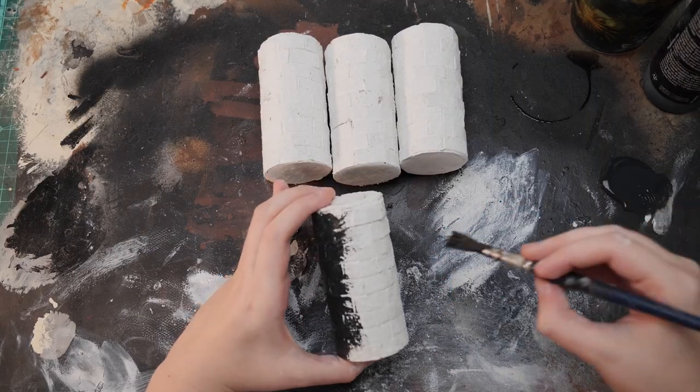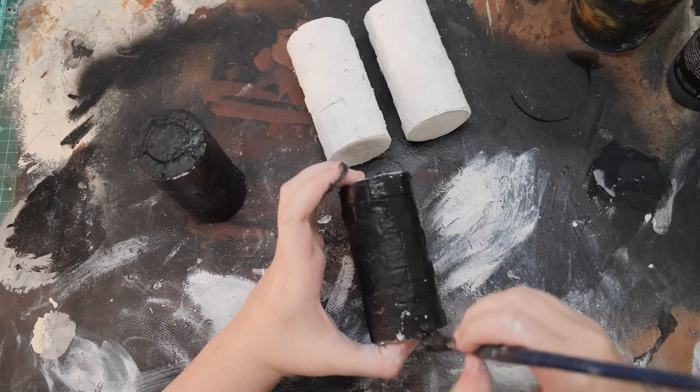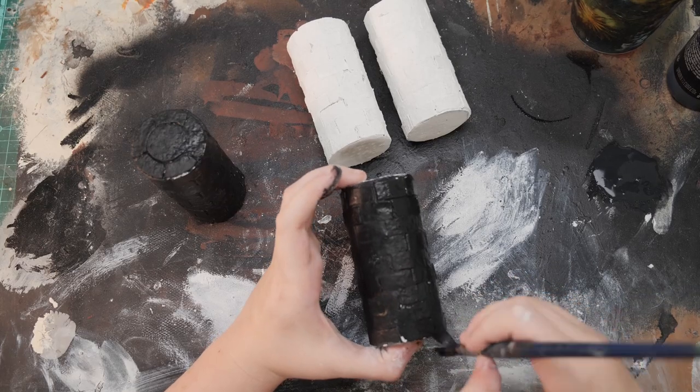Once everything was dry I gave it a coating of mod podge and black paint to seal in the cardboard and the plaster.